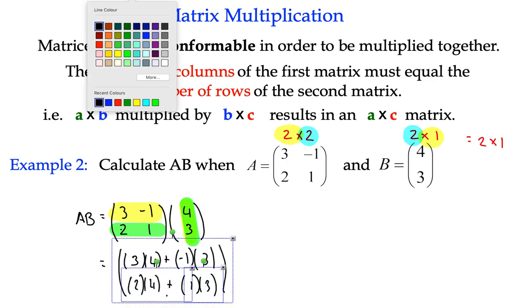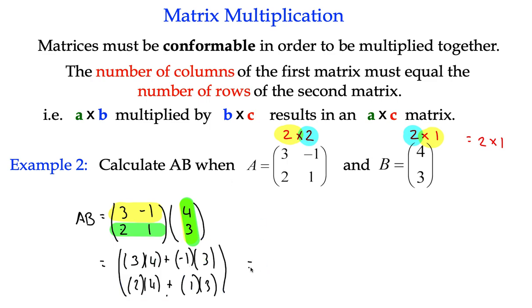And if we have a look at that, what does the first one give us? 12. I'll do an extra line of working. So that's 12 minus 3. And here we've got 8 plus 3. So overall, we get the answer 9, 11. So the product AB, matrix AB, has the elements 9 and 11.